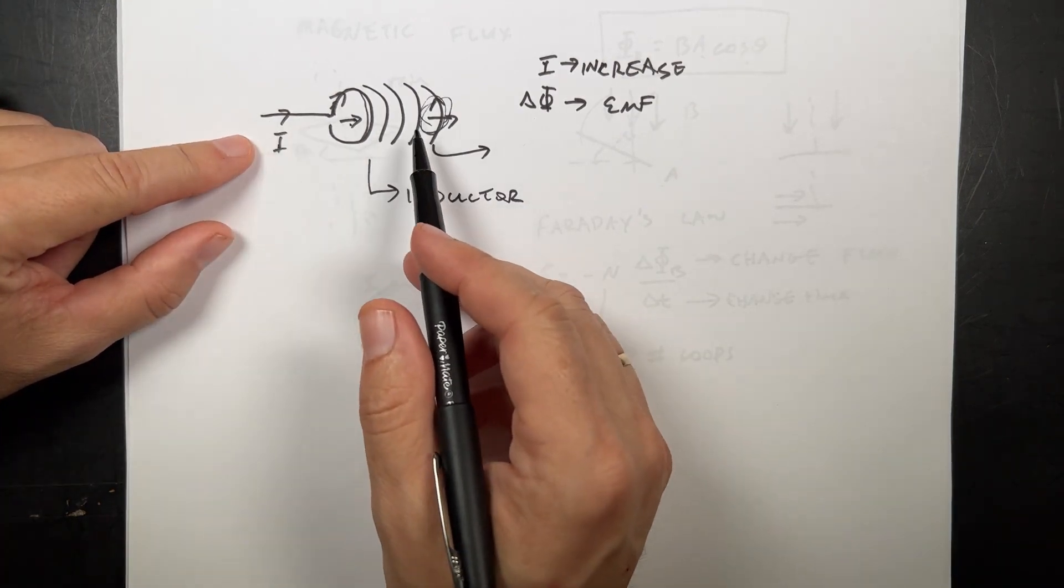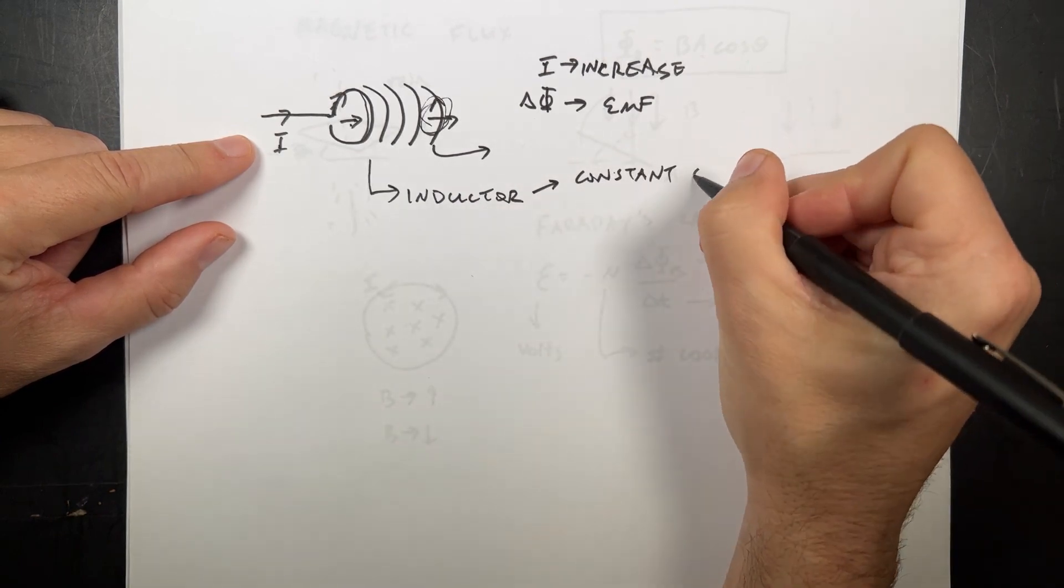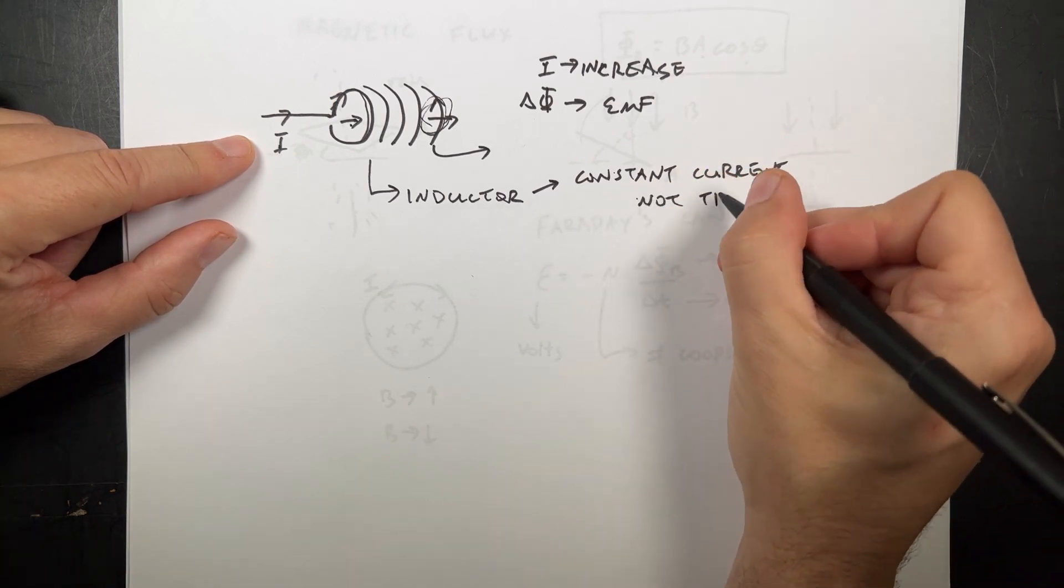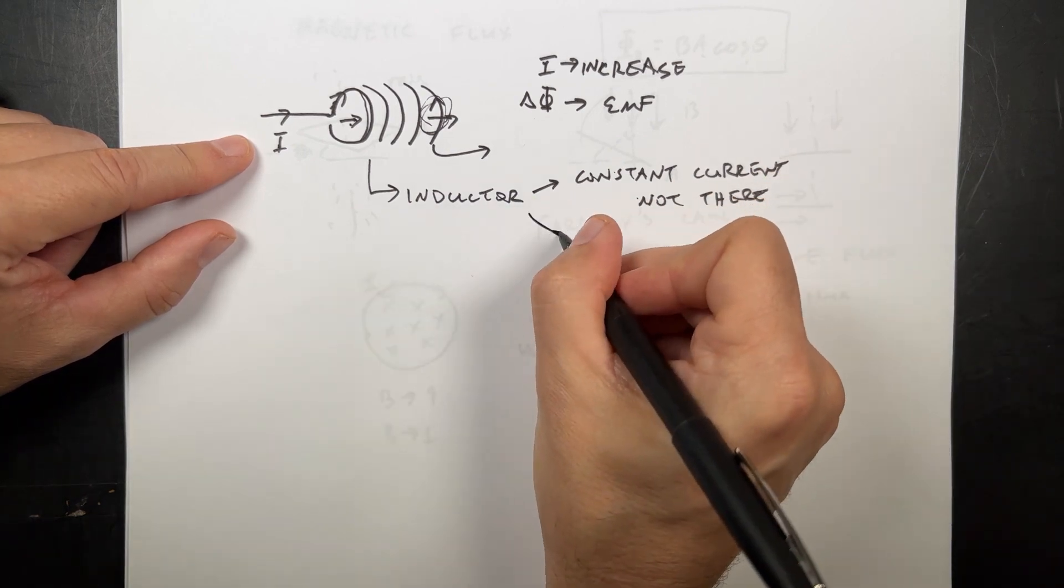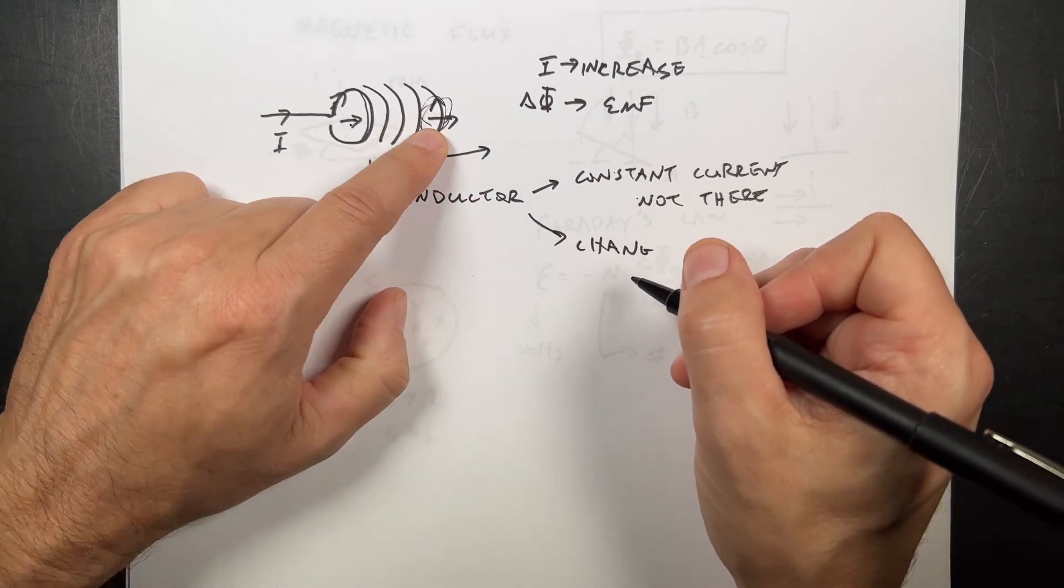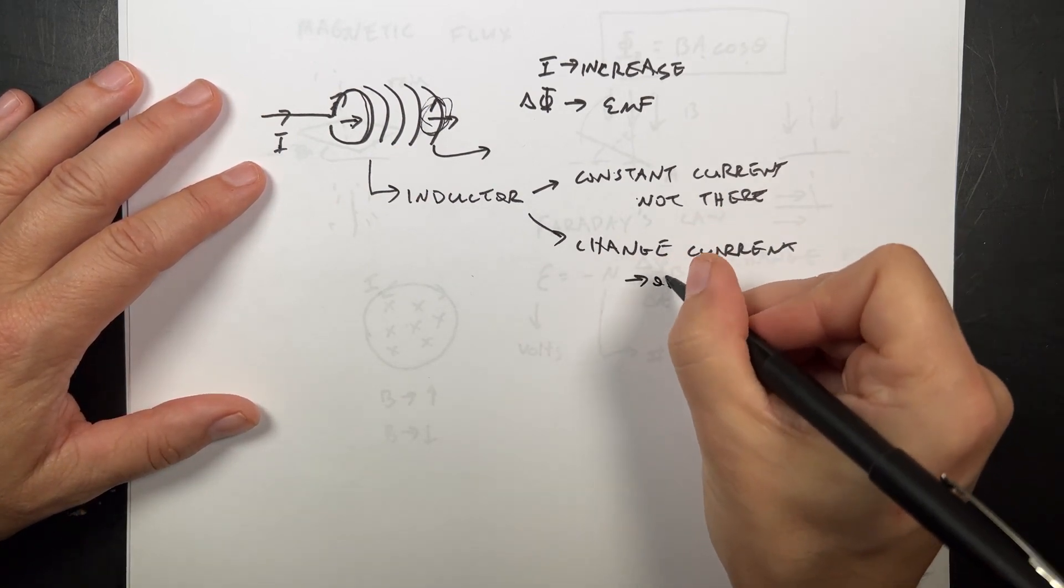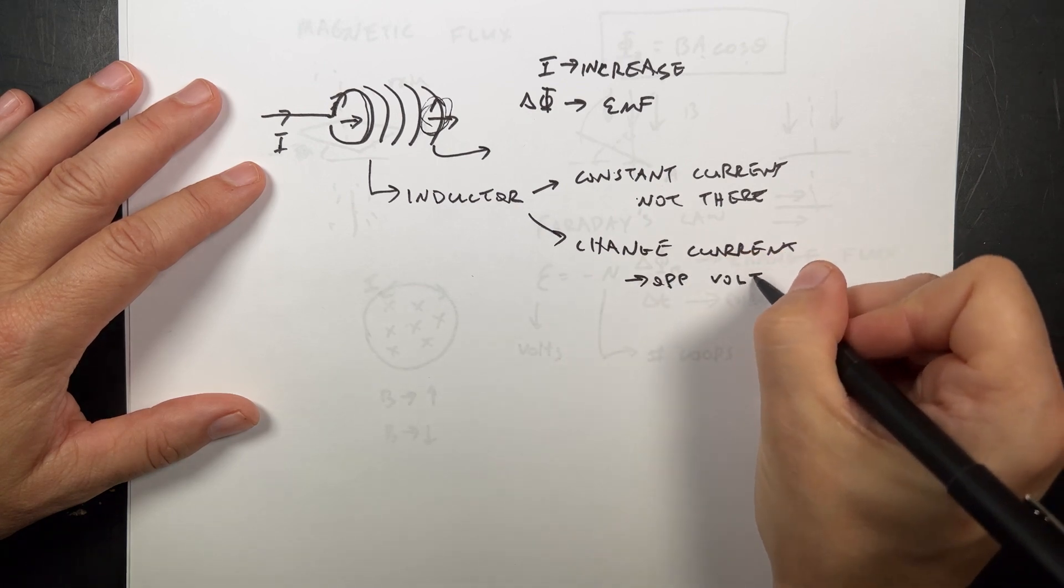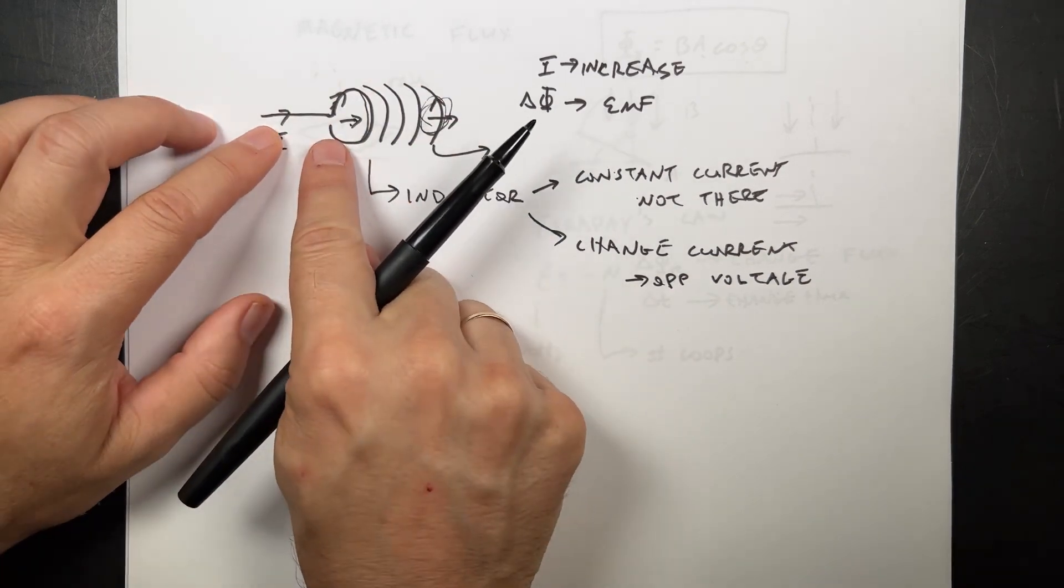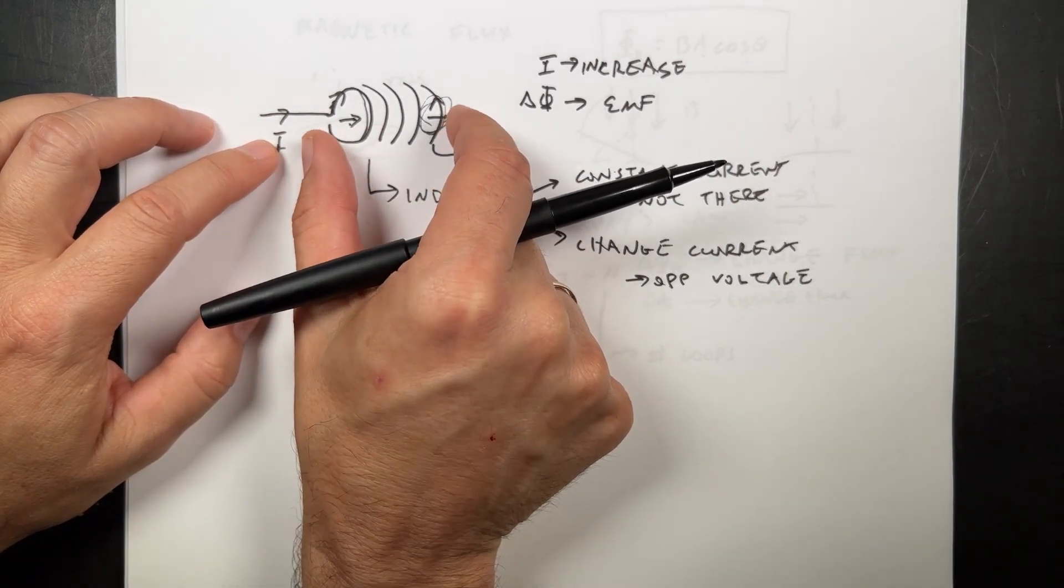Because if the current's constant, so for constant current, it's like it's not even there. It's just a plain wire. But for changing current, the faster the current changes, the greater the change in flux, the greater the induced electric current. For changing current, this makes an opposite voltage. So the whole inductor behaves as the current changes. So this makes a voltage for changing current.